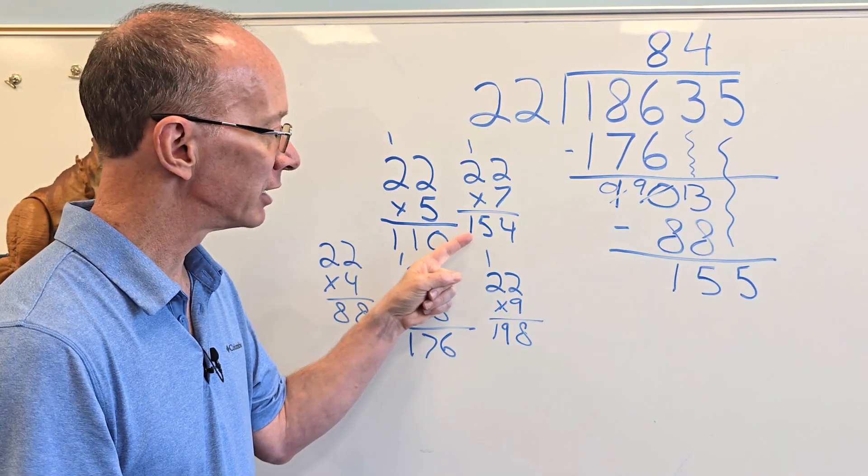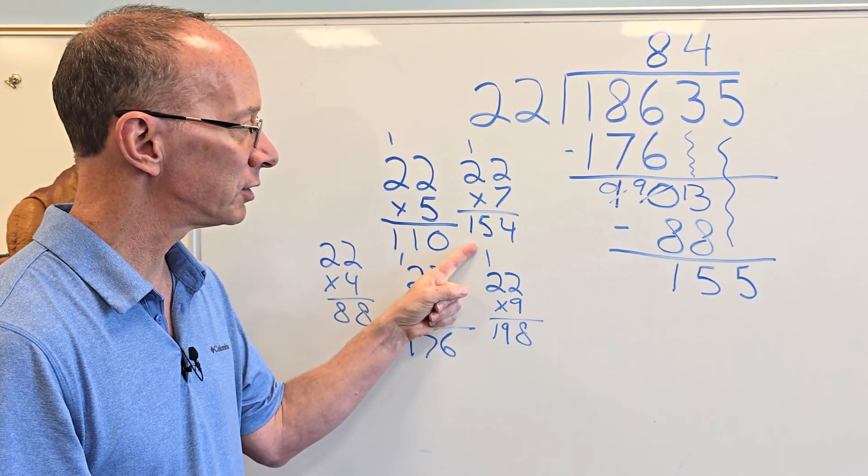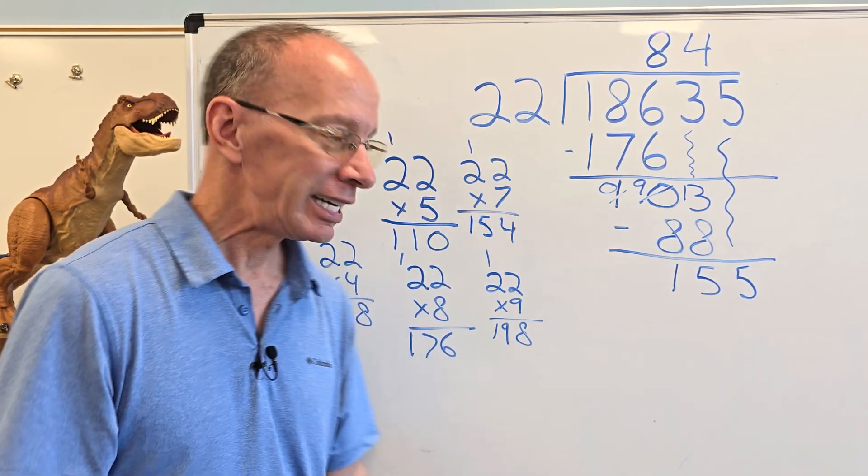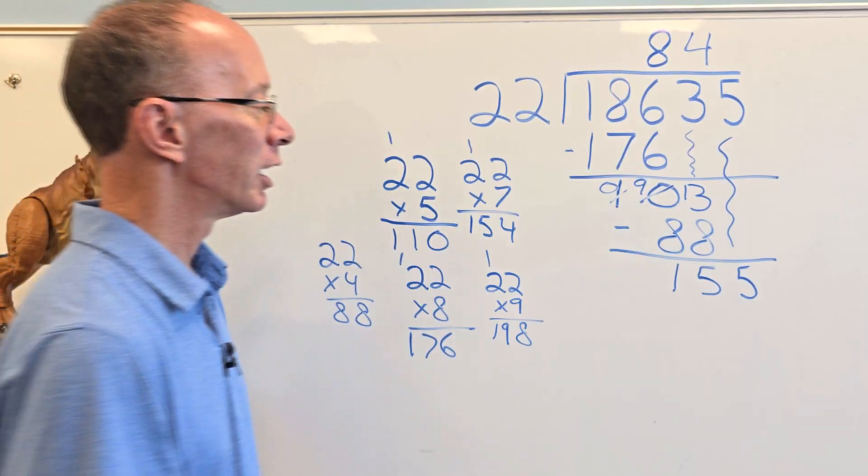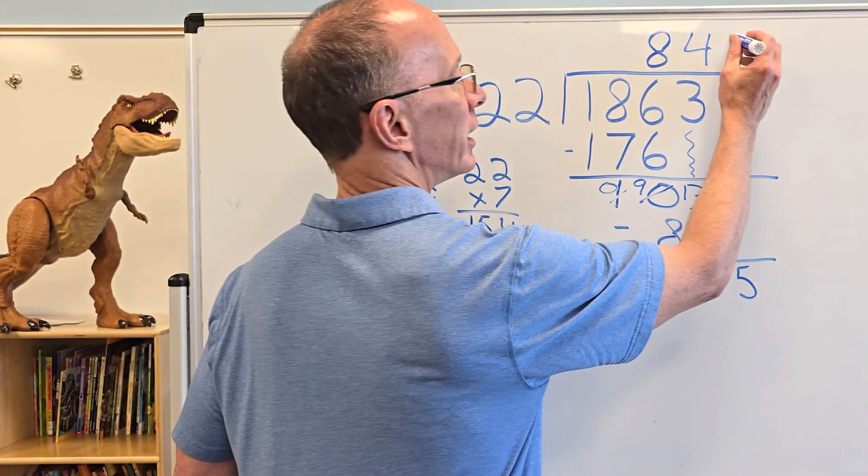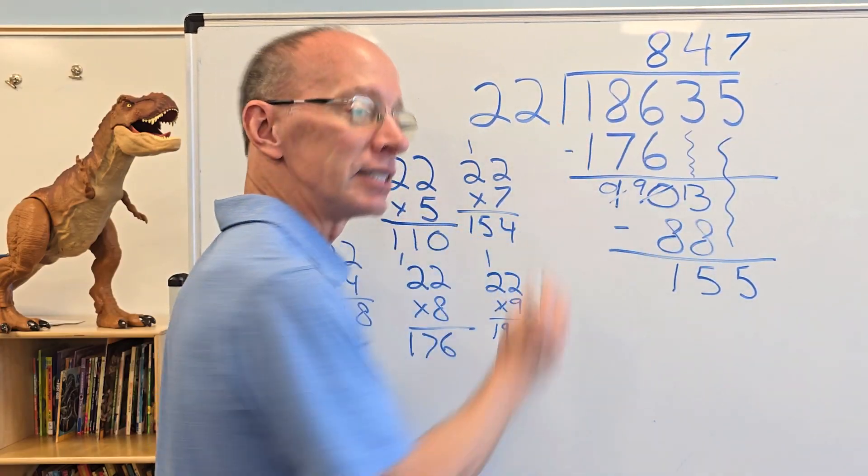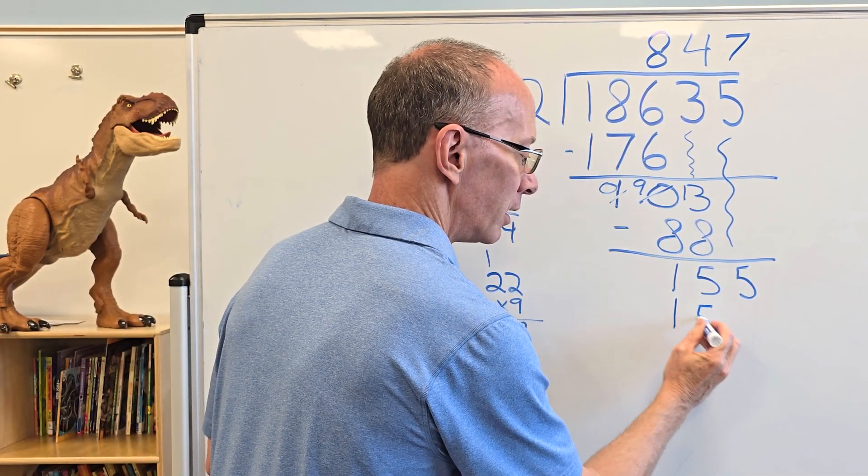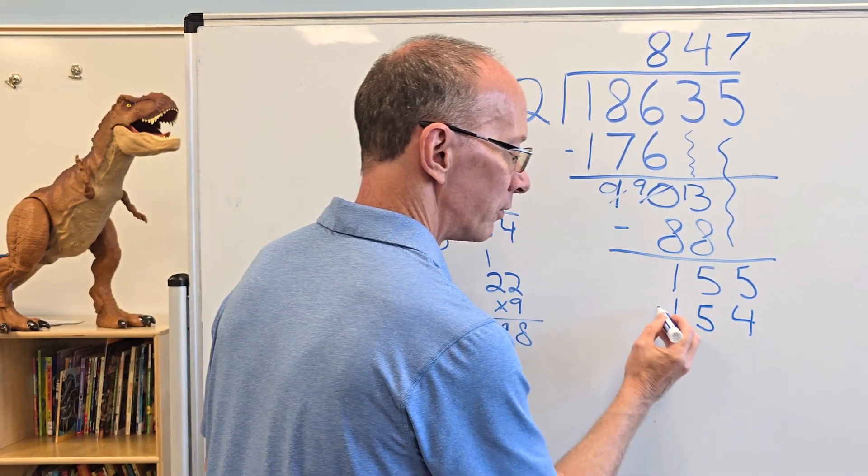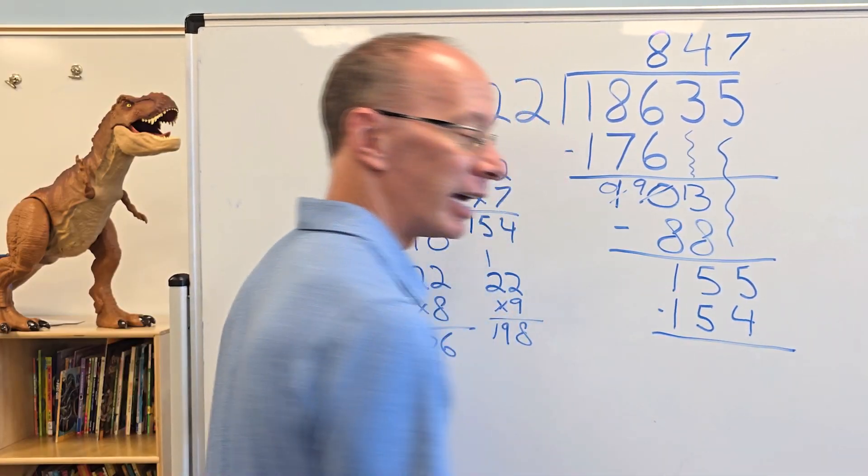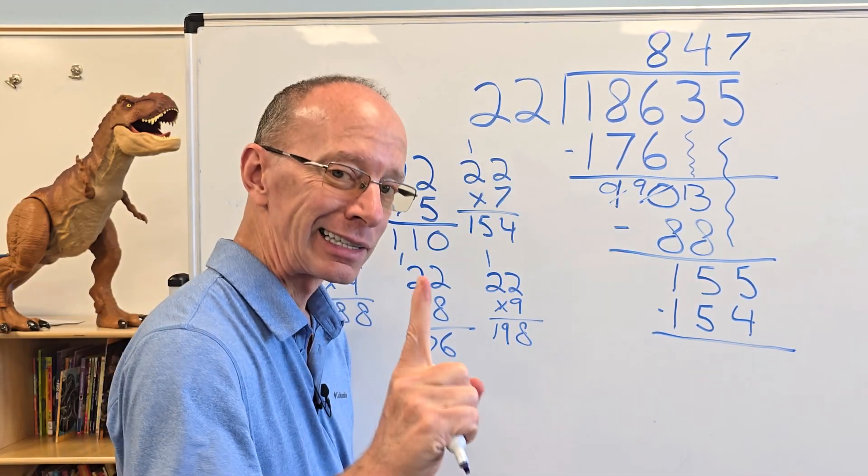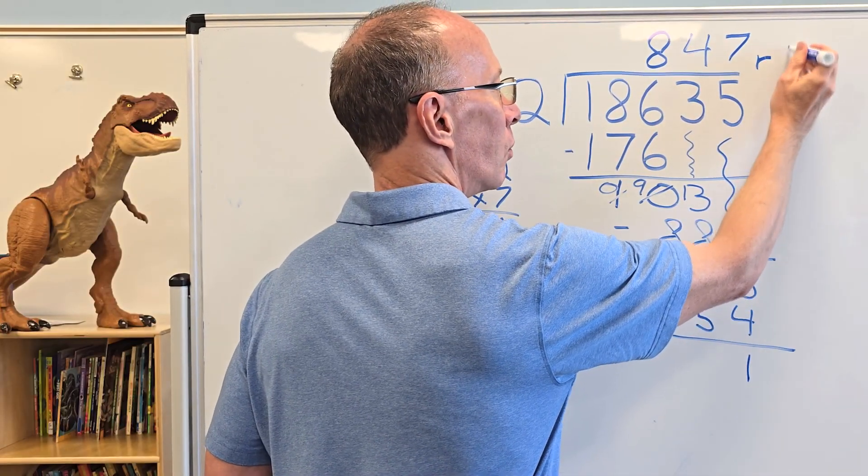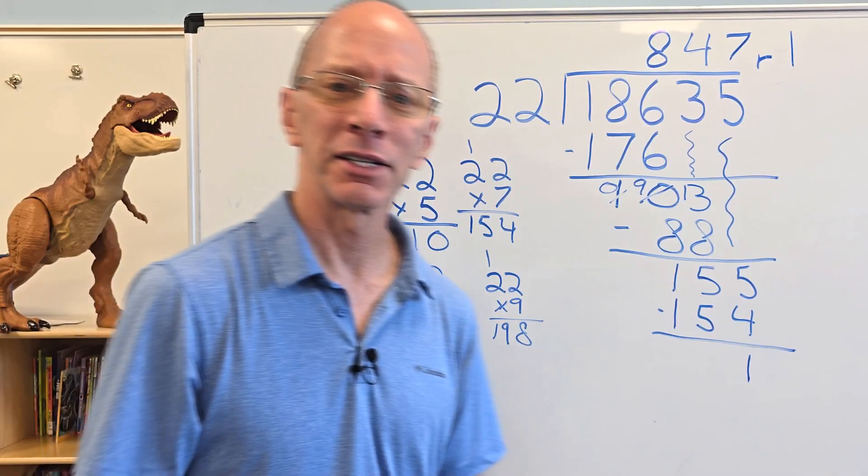I saw this one right here. 22 times 7 is 154. I don't think you're going to get any closer unless you're right on there. So let's put 7 right here. 7 times 22 is 154. All right. So I put 154 there. I subtract, and I have a remainder of 1 right here. So I put remainder 1. There's our answer.